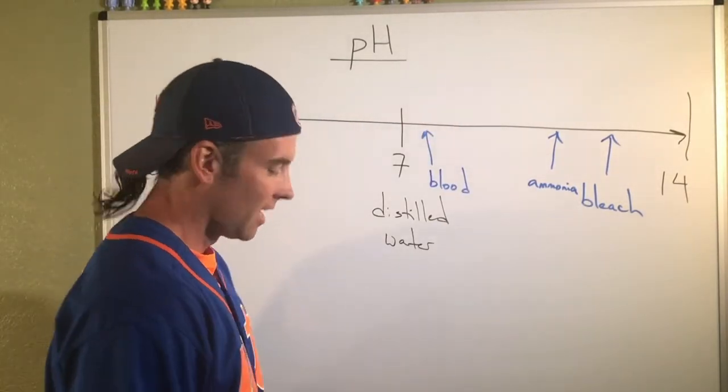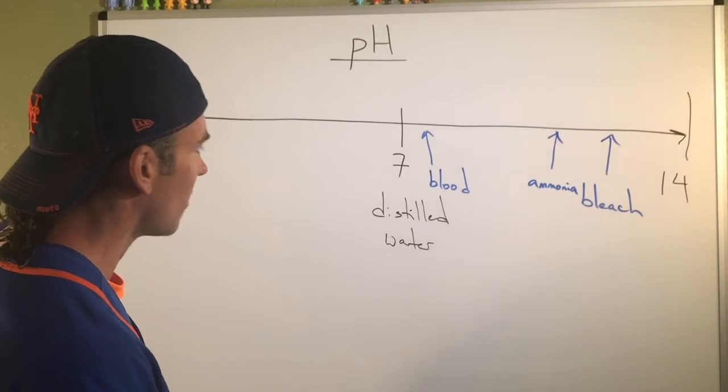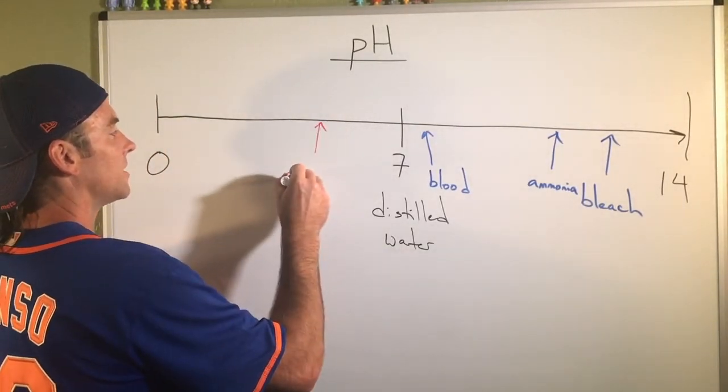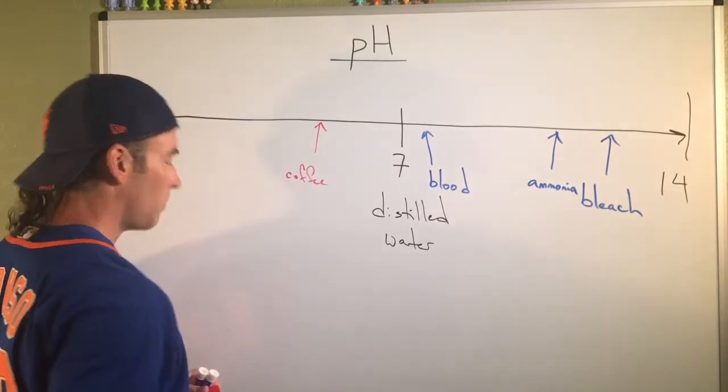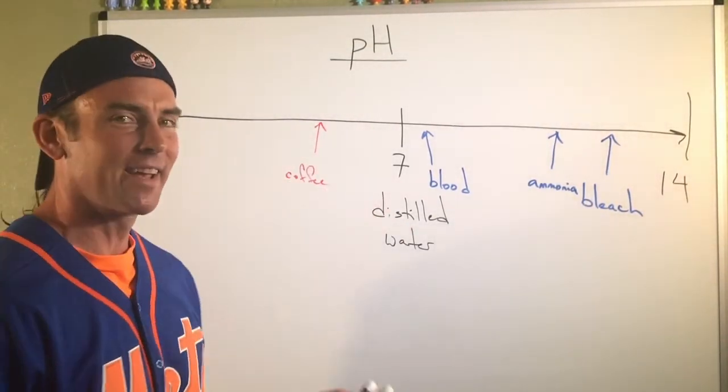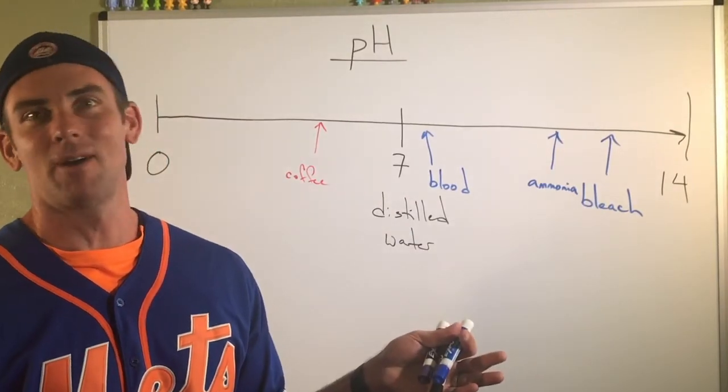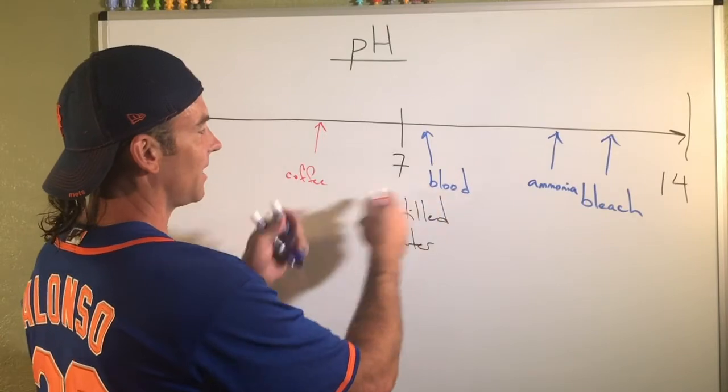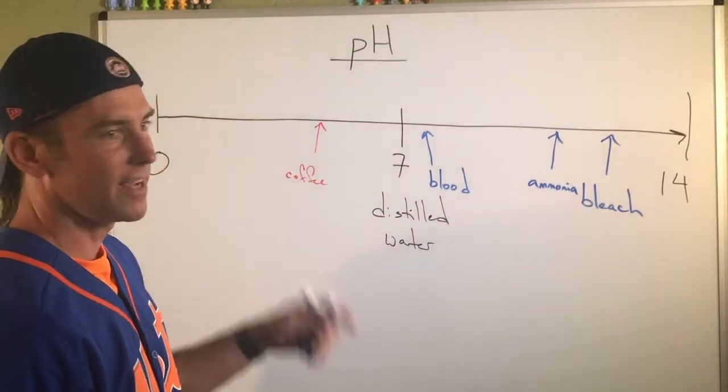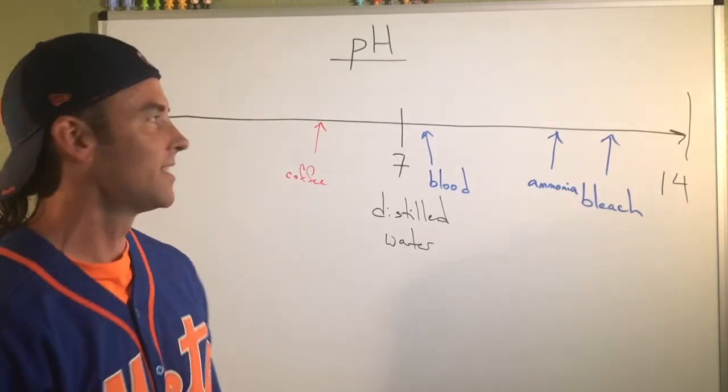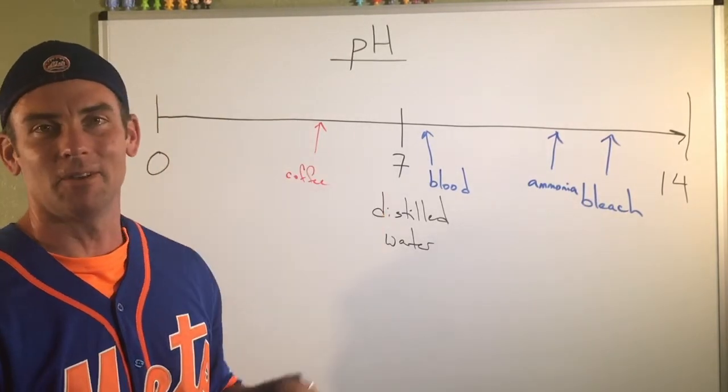So those are some really common basic solutions. Every morning I usually start with a coffee. Coffee usually has some substances in it that put it right around there. The important thing to recognize is that acids and bases are all around us. And in this region, like you wouldn't be surprised if I drank a coffee and I didn't die. Well, it turns out pH is around five and stuff like that.